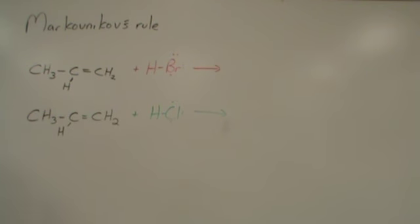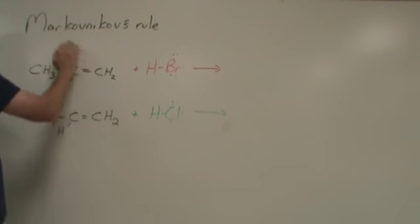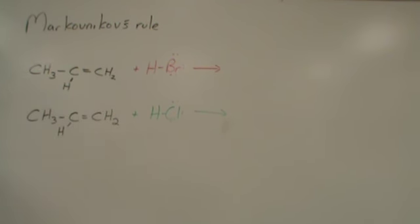What ends up happening if the alkene is asymmetrical is that we have two different options of what we might see, and we always see the same thing. There's a few exceptions we'll see later on in organic chemistry, but for now we're going to start with the simple, and this is called Markovnikov's rule.